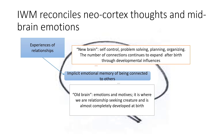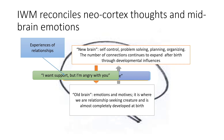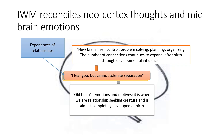The message from a securely attached child to the attachment figure is: I trust you, you support me, the relationship is a secure base for me to explore the world. The message from a child who is insecure and avoidant is: I'll manage alone. The message from a child who is insecure and ambivalent is: I want support but I'm angry with you. And the message from a disorganised child is: I fear you but I cannot tolerate separation. It is behaviours that flow from the different representations of attachment that a child's attachment style is expressed.